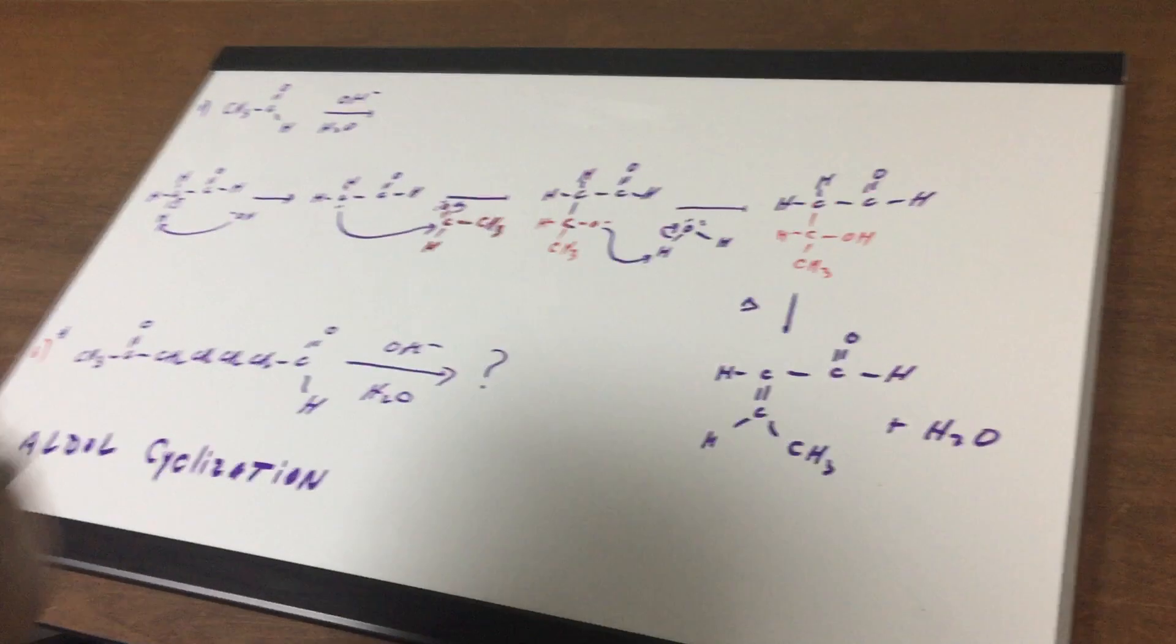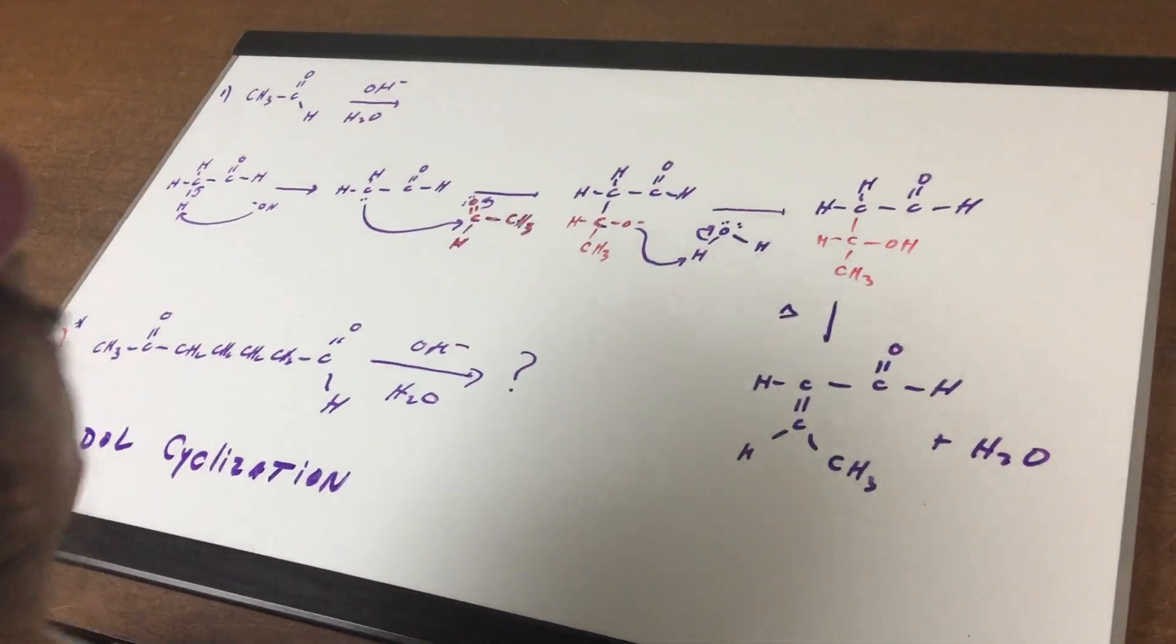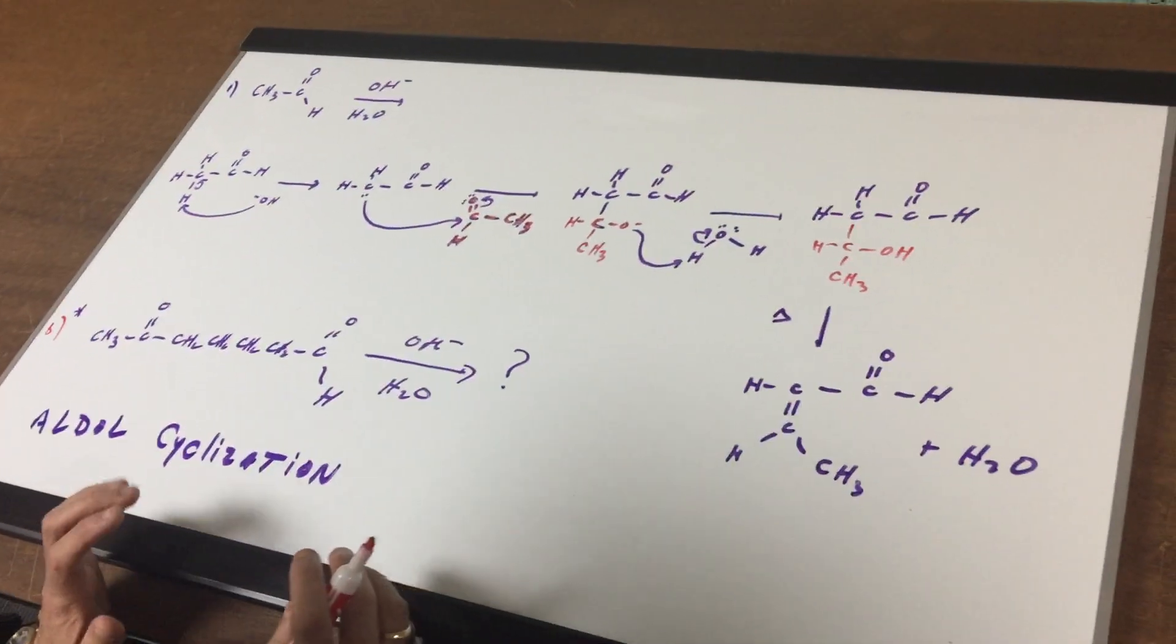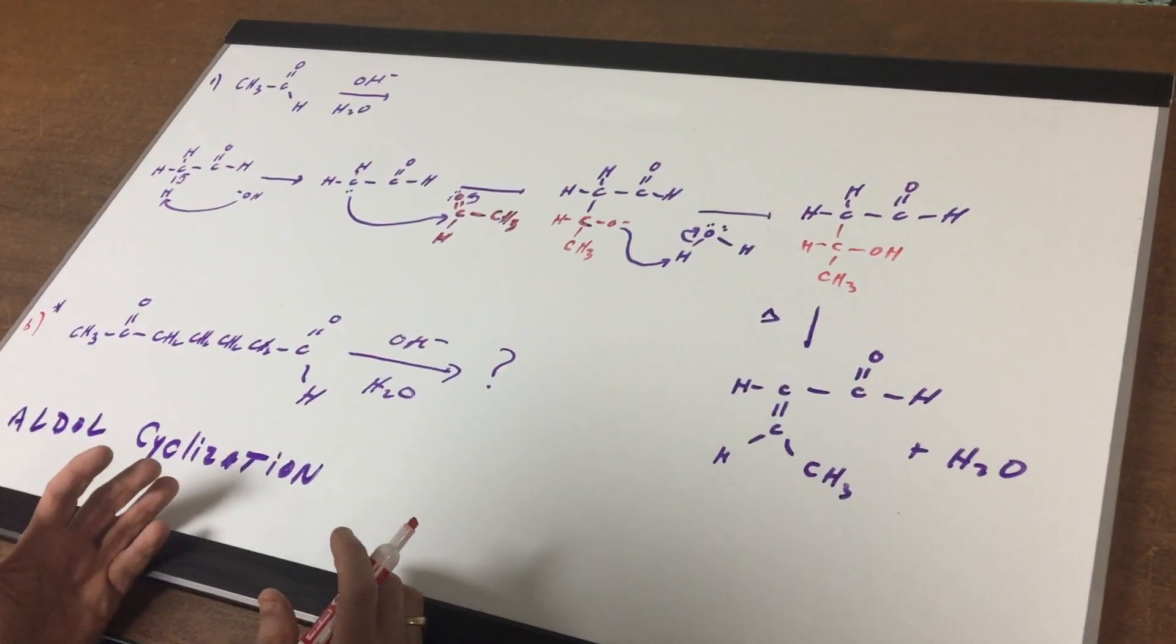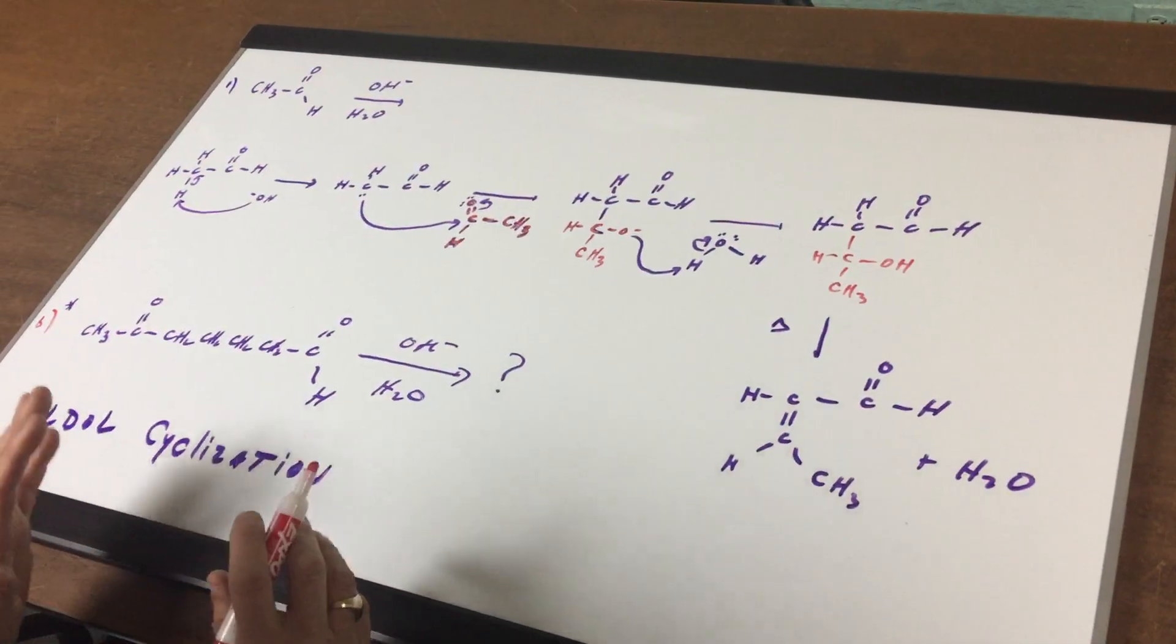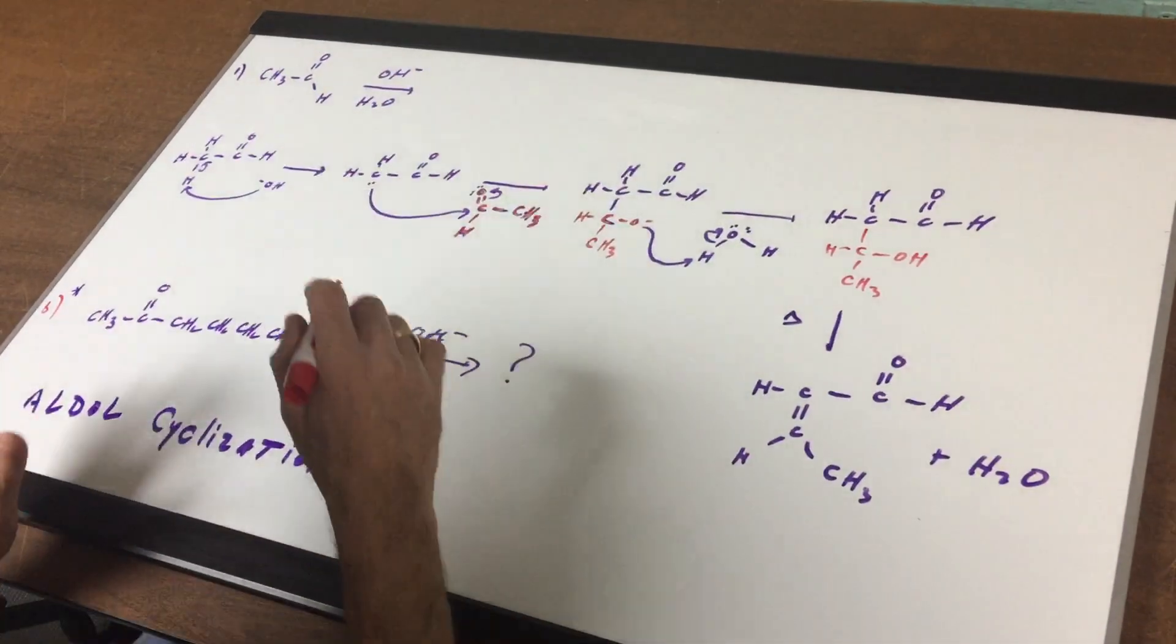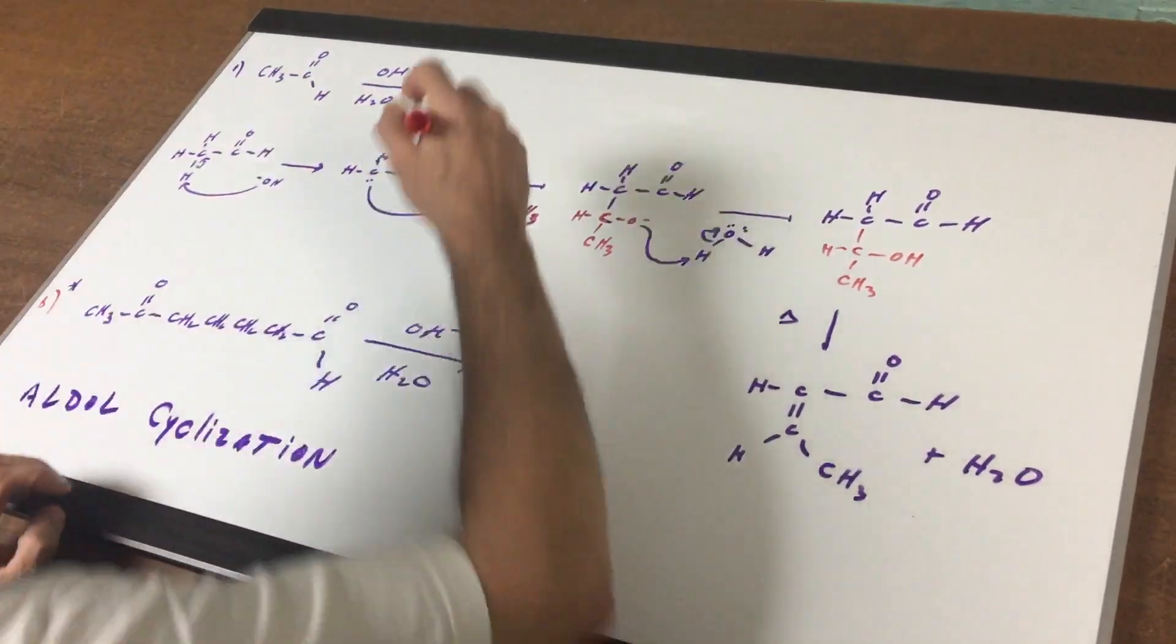First thing I want you to do is look at problem number one, which is a short bet on the DAT exam. You have an aldehyde. Now if you ever see an aldehyde or a ketone, a simple ketone that has an alpha hydrogen, and you treat it with dilute acid or dilute base, a reaction known as an aldol condensation occurs.